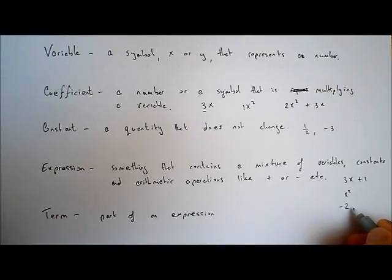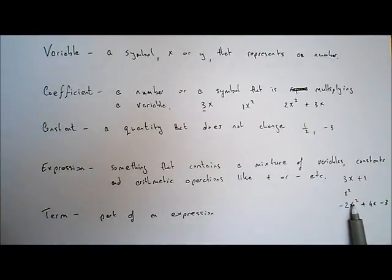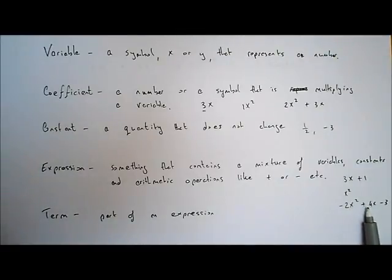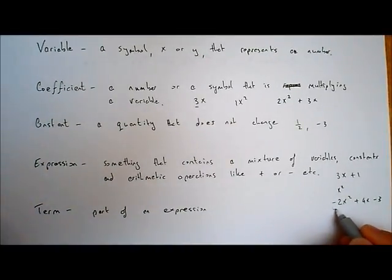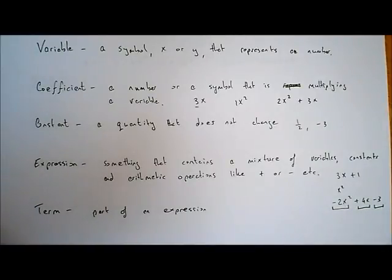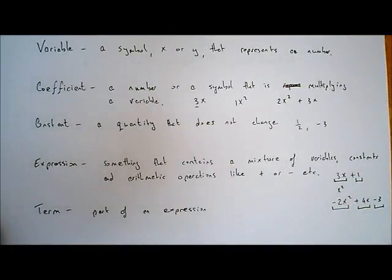I could write down minus 2x squared plus 4x minus 3. This is an expression — it's a quadratic expression because we have an x squared, or the highest power is x squared. A term is a part of an expression. In this quadratic expression, minus 2x squared is the first term, plus 4x is the second term, and minus 3 is the third term. This expression contains 3 terms, whereas the expression 3x plus 1 contains just 2 terms.